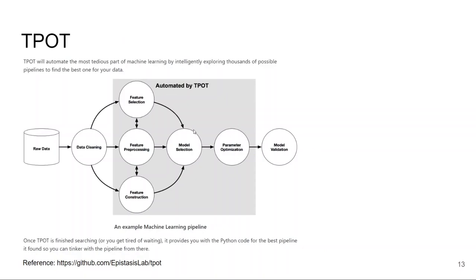If you see this image, this is the portion where TPOT automates. TPOT explores thousands of possible pipelines to find the best one for your data. These are the different steps that are automated by TPOT: feature selection, feature preprocessing, feature construction, model selection, and parameter optimization. And the best part of TPOT is once it finishes searching, it provides you with the Python code for the best pipeline it found.